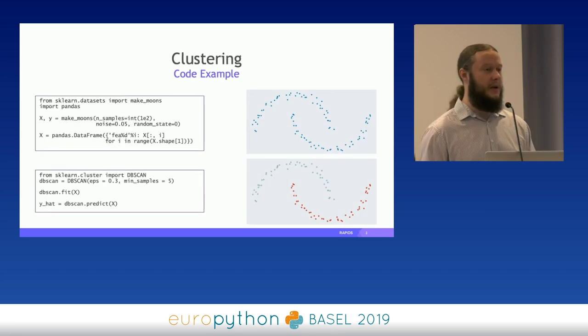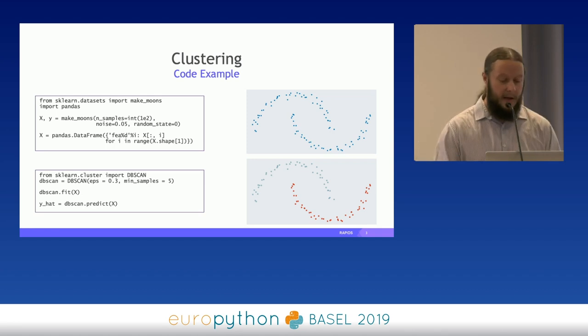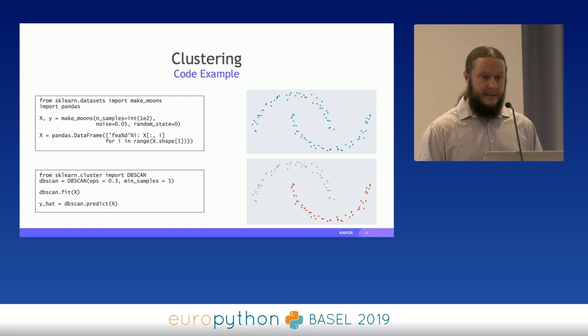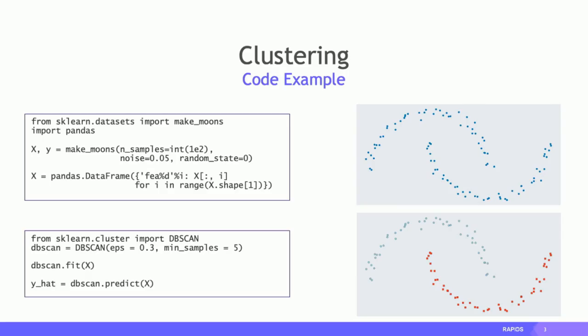Before I start introducing what we aim to achieve with Rapids, with Dask and CuPy in this context, let's take a look at this simple example. This is a very simple example of a typical data science pipeline. You would start loading some data or creating a dataset — in this case we're using make_moons — then create a dataframe, and do some clustering with scikit-learn. But what if we want to accelerate this without reinventing the wheel, keeping things as simple as possible for users?